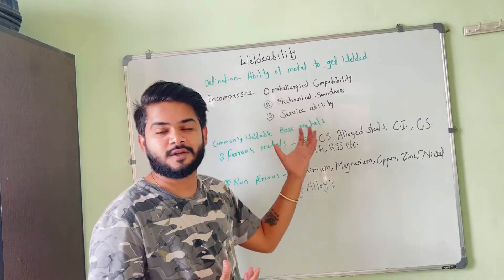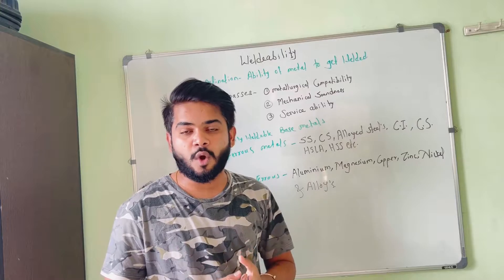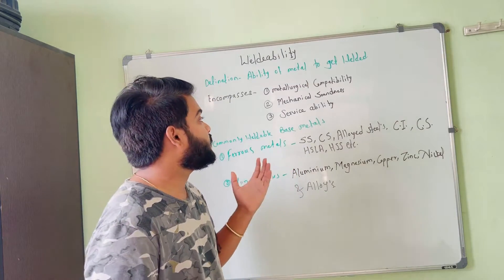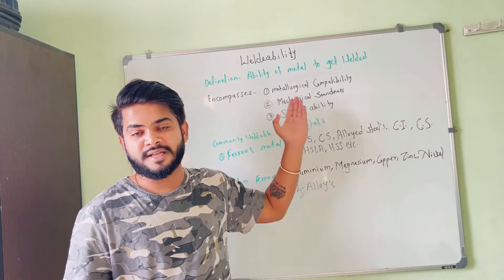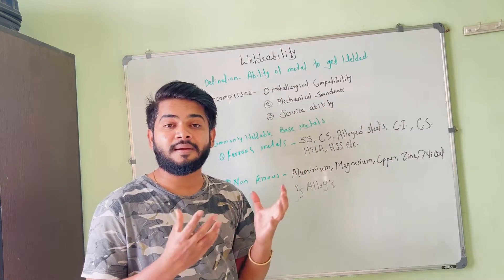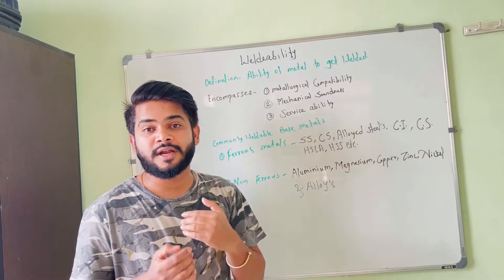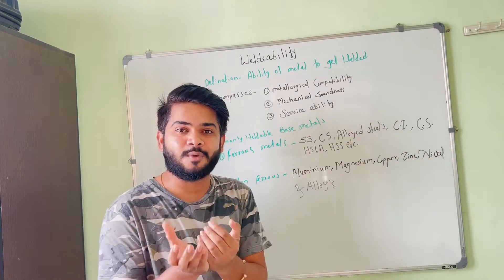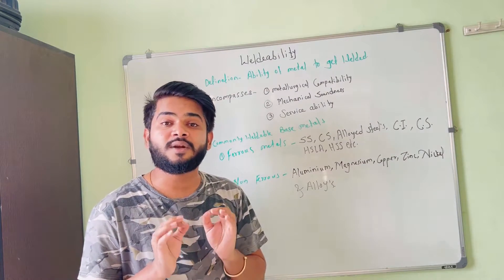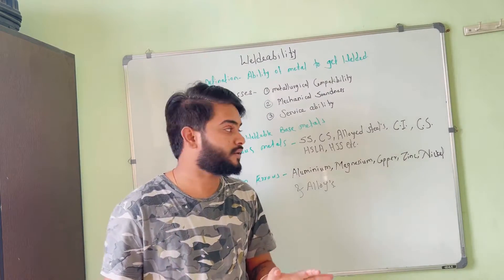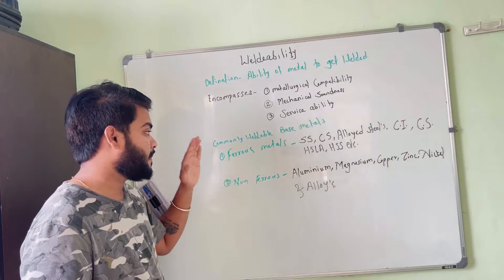We will start with the definition of welding. The ability of a metal to get welded is called weldability. Weldability encompasses metallurgical compatibility, meaning the fusion ability of parent and base metal, the weld metal's ability to get welded with mechanical soundness, and the serviceability of the resultant weld joint.